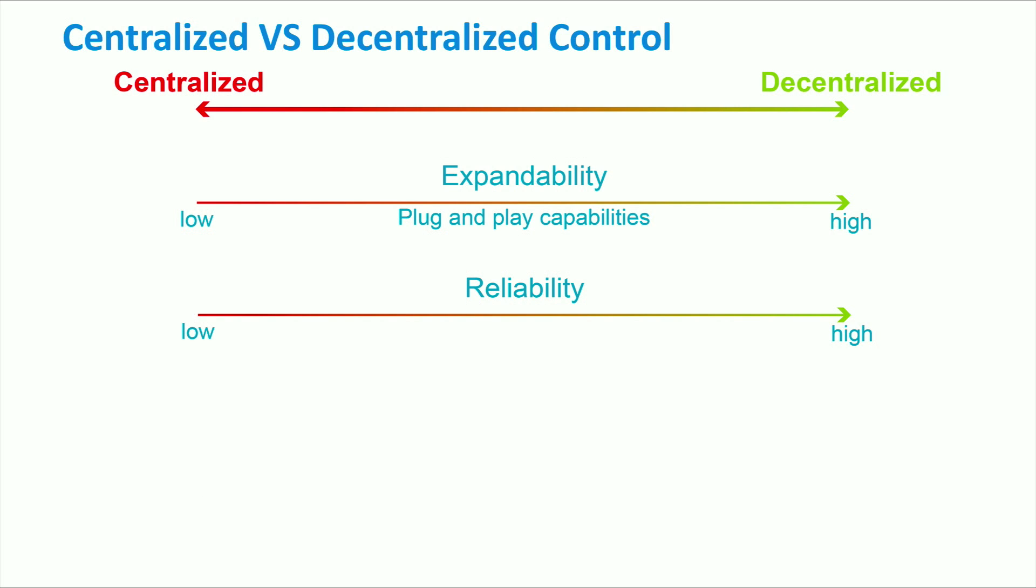The main disadvantages of centralized control schemes are that they are computationally expensive and time-consuming. This is due to the fact that the central controller needs to run an optimization problem that takes into account a large number of distributed generation units, loads and storage units.